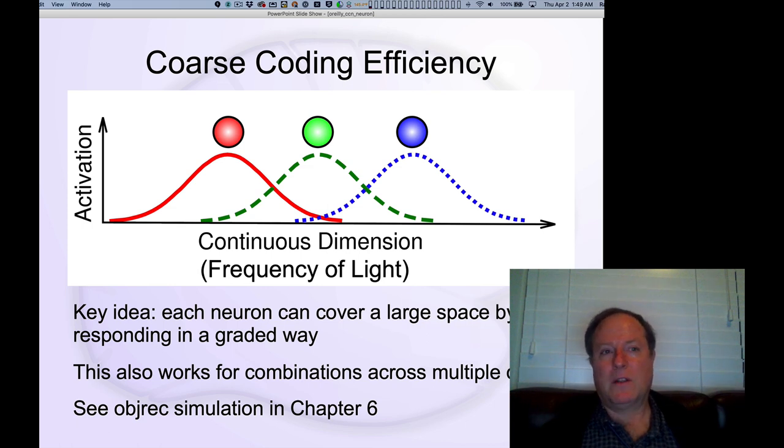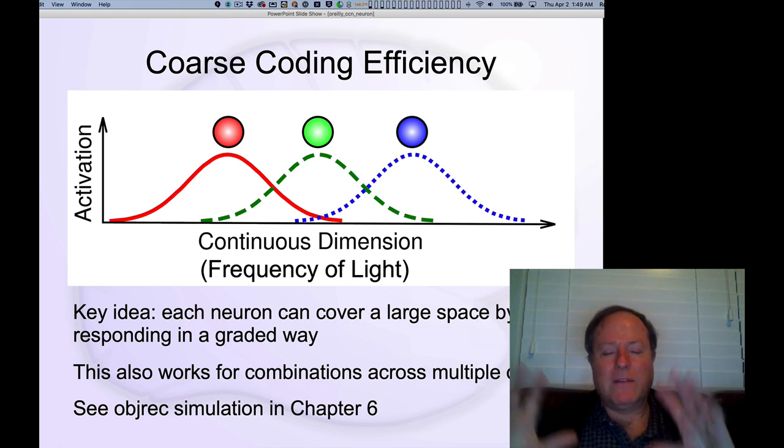I think of it as fighting combinatorics with combinatorics. So you take a problem and you come up with a combinatorial code, a very efficient way of representing this overall continuous dimension through combinations of these basic detectors. So a particular shade in between red and green, which is going to be some version of yellow, that will be a particular rate of firing of each of those guys.